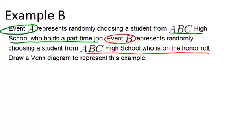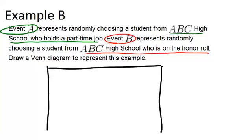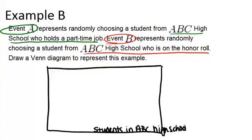Draw a Venn diagram to represent this example. So we want to start out by making our box to represent the full sample space. In this case, the sample space will be students in ABC High School. So anyone that is a student at the high school is in this box. Now some of those students will have part-time jobs, and those are the ones that are in event A. So we're making a circle for event A, and these are people with part-time jobs.